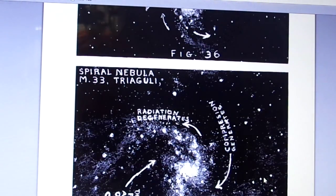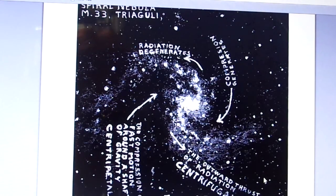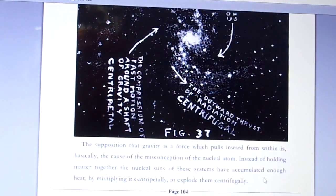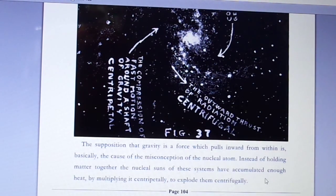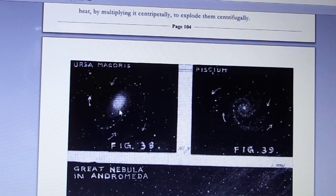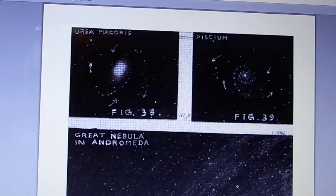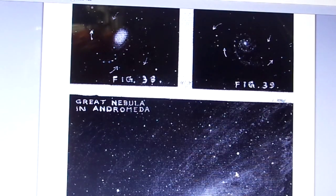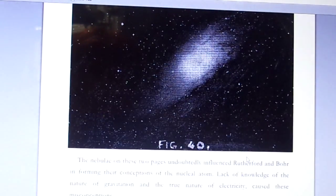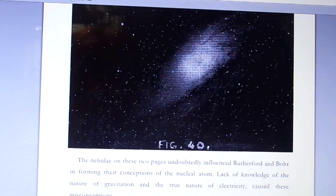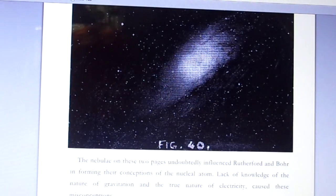Figure 36: the spiral nebula. Thirty-seven. The supposition that gravity is a force which pulls inward from within is basically the cause of the misconception of the nuclear atom. Instead of holding matter together, the nuclear suns of these systems have accumulated enough heat by multiplying it centripetally to explode them centrifugally. Ursa Majoris. Piscium. Andromeda, the great nebula in Andromeda. The nebulae on these two pages undoubtedly influenced Rutherford and Bohr in forming their conceptions of the nuclear atom. Lack of knowledge of the nature of gravitation and the true nature of electricity caused these misconceptions.